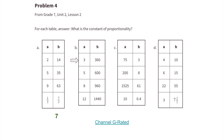Table B: 360 divided by 3 is 120, 600 divided by 5 is also 120, 960 divided by 8 is 120, and 1,440 divided by 12 is 120. So for table B, the constant of proportionality is 120.